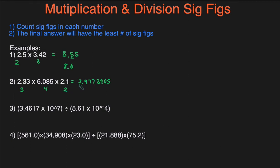So I'm going to underline the second sig fig — that's the first sig fig, and then this is the second sig fig. Then you take a look at the number next to it to see if we round up or not. Since the number seven is greater than five, that means we're going to round up. So we're going to round this up to 3.0, and that'll be the final answer.